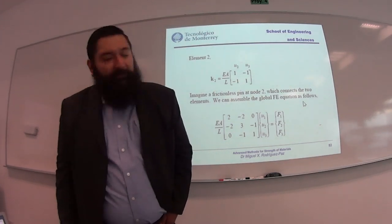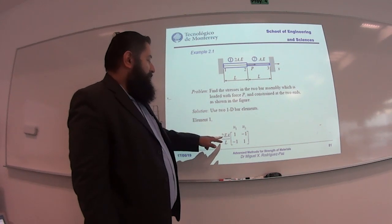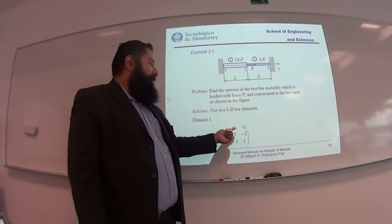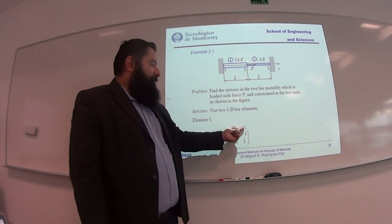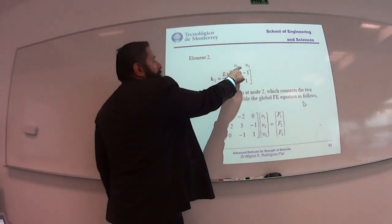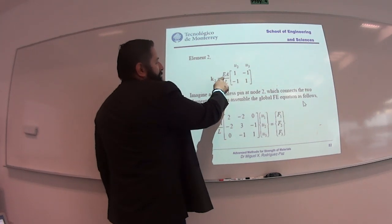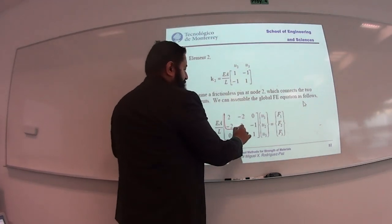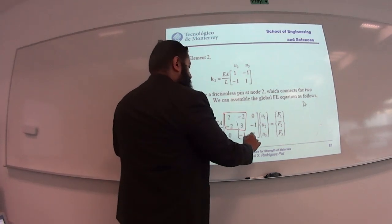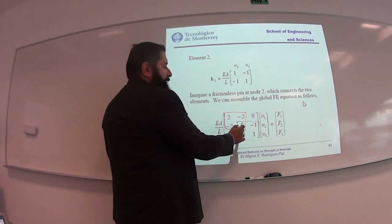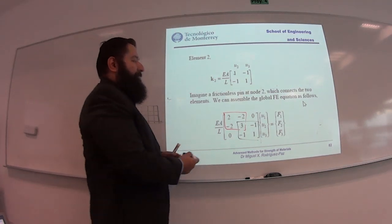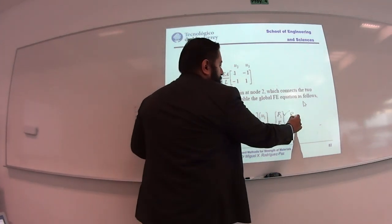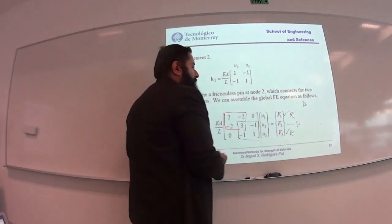For element one, the general formula gives k = E·(2A)/L times [1, -1; -1, 1], going from node 1 to node 2. For element two, from node 2 to node 3, k = E·A/L times [1, -1; -1, 1]. We assemble these into the global stiffness matrix. The overlap at node 2 gives a value of 3 in the diagonal. We have degrees of freedom U1, U2, U3 with forces F1, F2 (= P), and F3, where F1 and F3 are reactions.